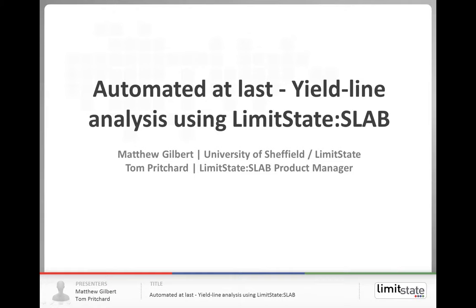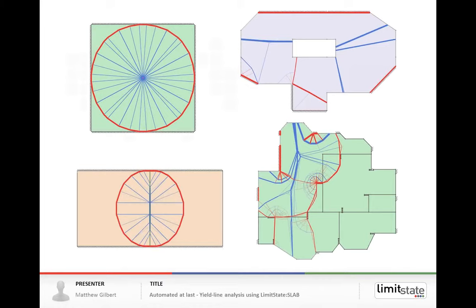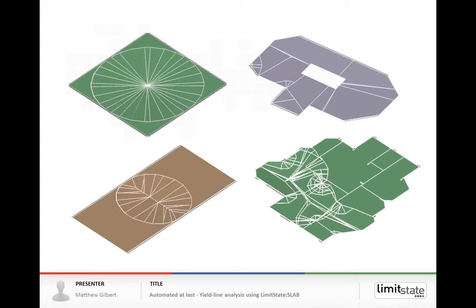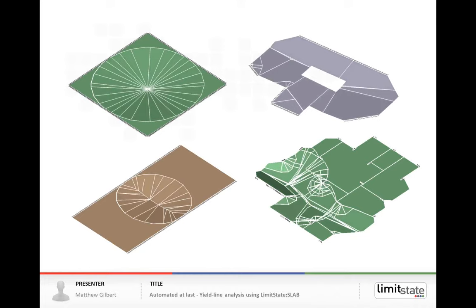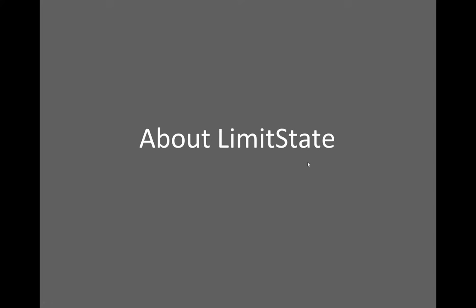Thanks very much Tom, and thanks everyone for joining us today. The first thing to do is just show you a few images of what we're actually talking about. The yield line method is a long-established method for analyzing slabs, but it's been quite difficult to apply to complicated slabs. The first image shows some simple slabs with familiar yield line patterns, and on the right, some more complex slabs with clearly more complex patterns.